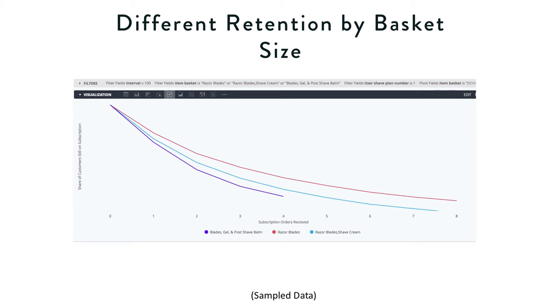So the topmost line, blades only, we default them into blades only plan. The middle line, blades and shave cream. The bottom line, blades gel and post-shave balm. So there are differences here. There are fairly dramatic differences in the retention rates across these different starting baskets. What's great about this is that we can read off the y-axis the cumulative share of people still on a shave plan or on a subscription after some number of orders, and it'll tell you exactly what that percentage is, and we can plug that right into a business case model.